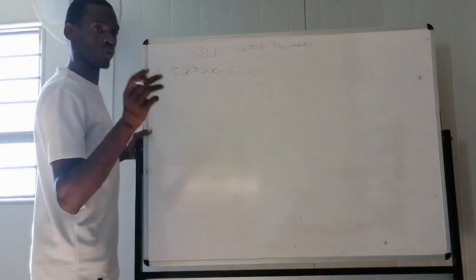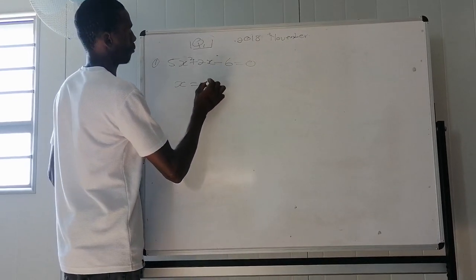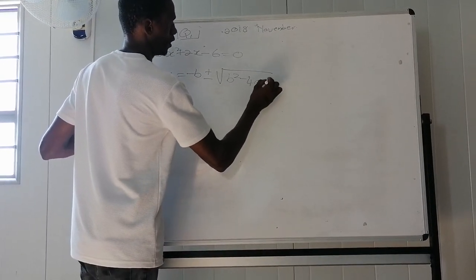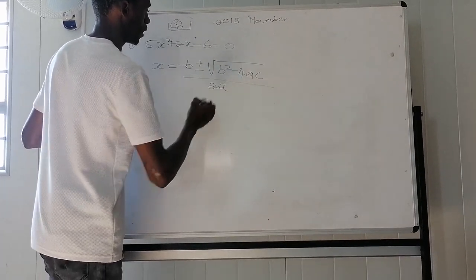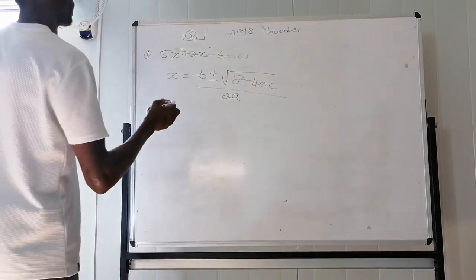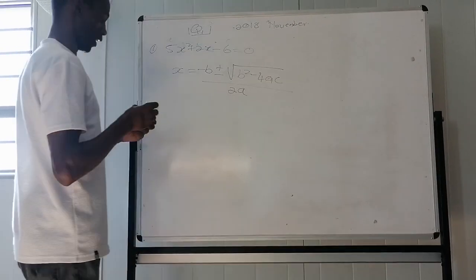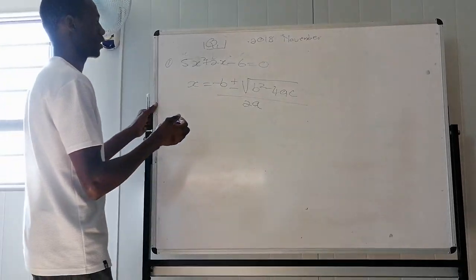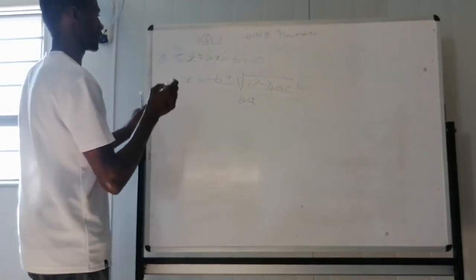So remember, you must know your quadratic formula by head, guys. It says x is equal to negative b, plus or minus b squared minus 4ac, all over 2a. Remember, this is your a, this is your b, and that is your c. So we substitute. Remember, one mark for the formula guys. You must know it by head.